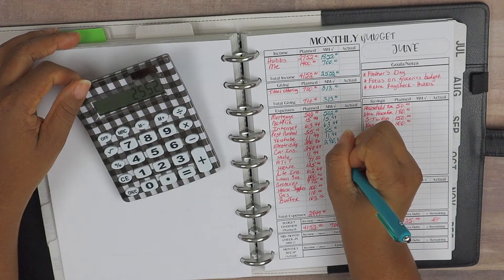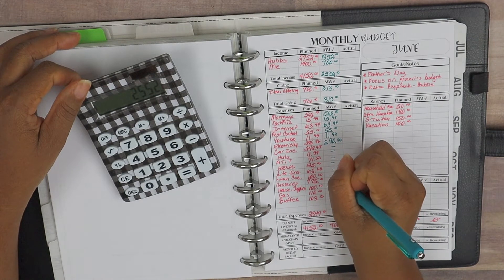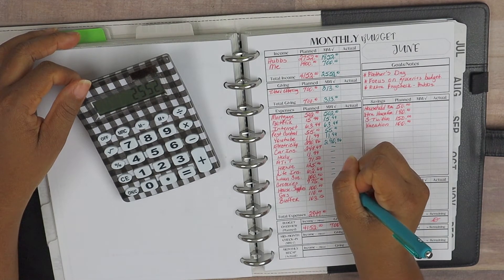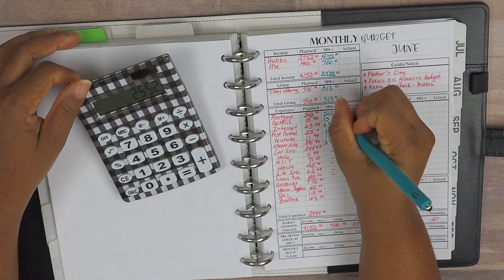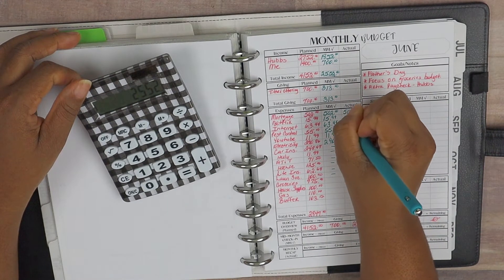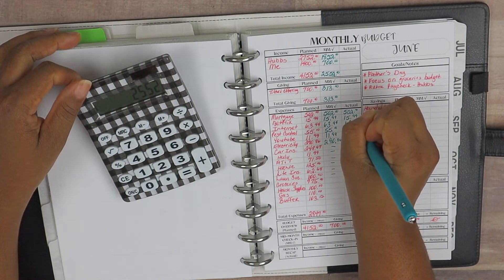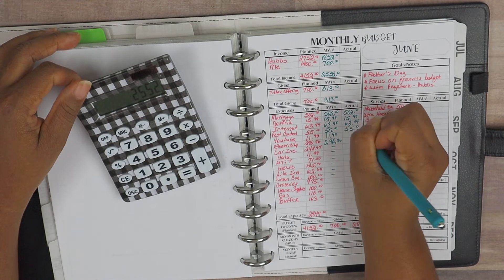And I'm going to go ahead and put in for our actuals because nothing is going to change with this as far as our mortgage, our Netflix, and our internet. So I'll go ahead and fill these actuals in, but I'll wait until the end to get a full total.